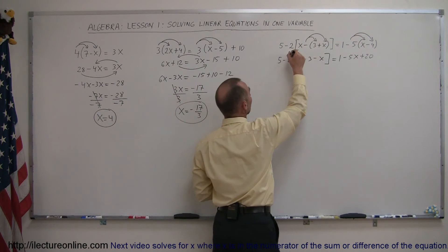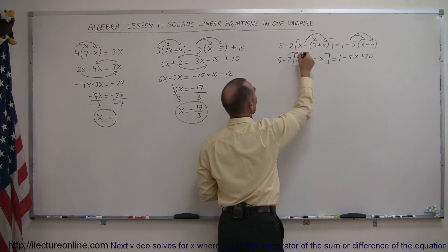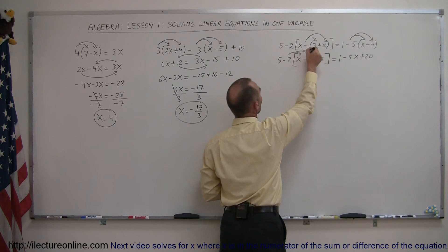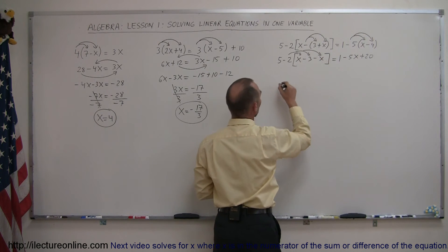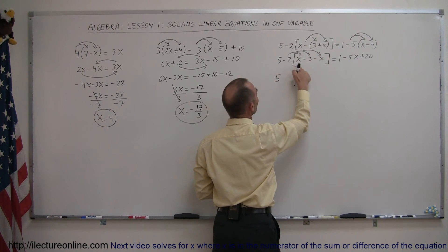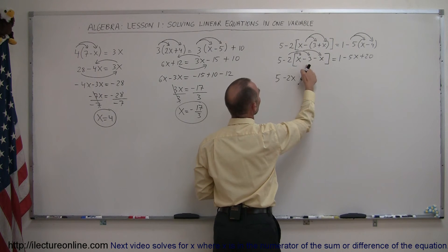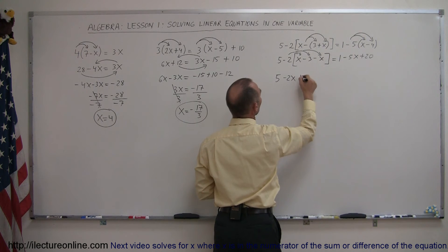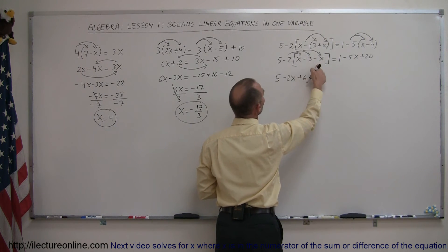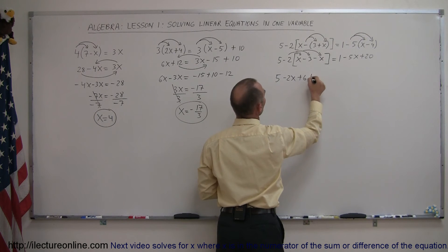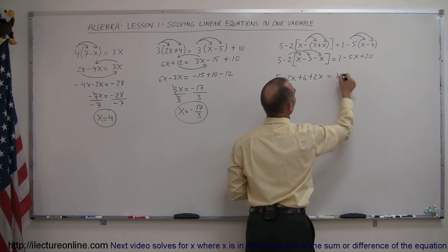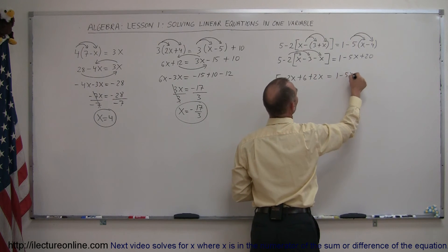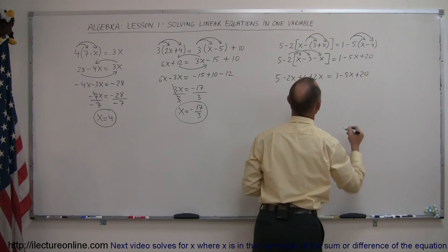The next step is to get rid of the brackets. The negative 2 is going to be distributed to the x, to the negative 3, and to the negative x. So 5 minus 2 times x is minus 2x, minus 2 times negative 3 is plus 6, minus 2 times negative x is plus 2x, equals 1 minus 5x plus 20.